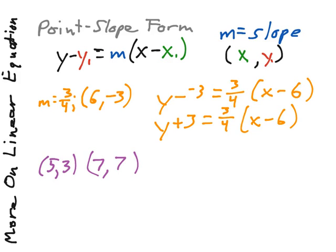Slope, if you'll recall, is the expression of change of y divided by change of x. So how much do our y's change if we go from 3 to 7? That's an increase of 4. And how much does our x change if we go from 5 to 7? Well, it's a change of 2.